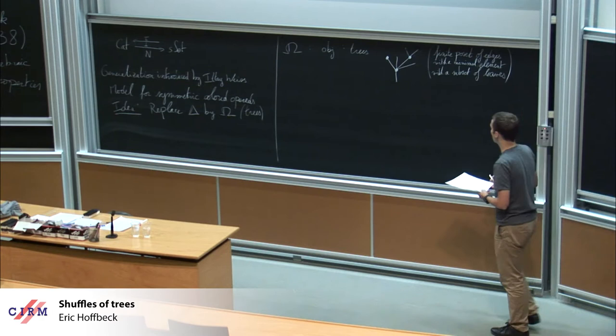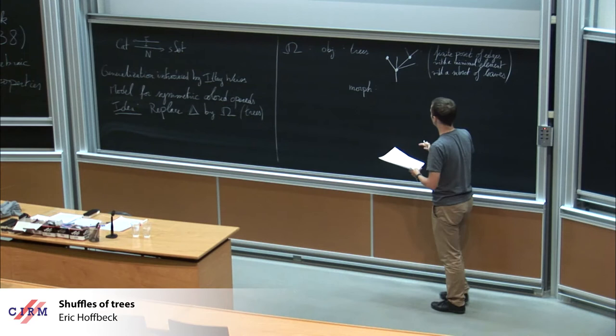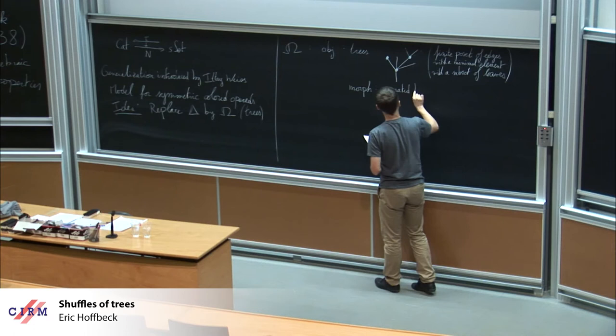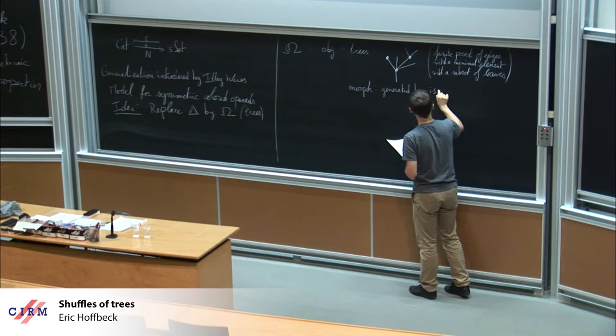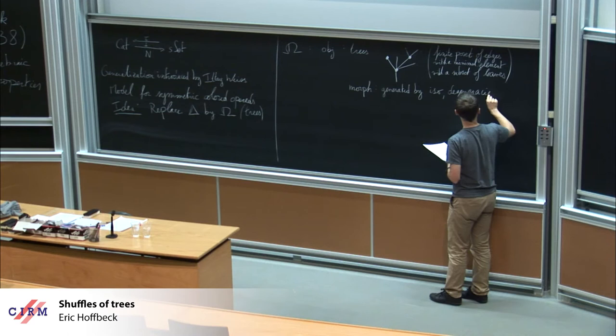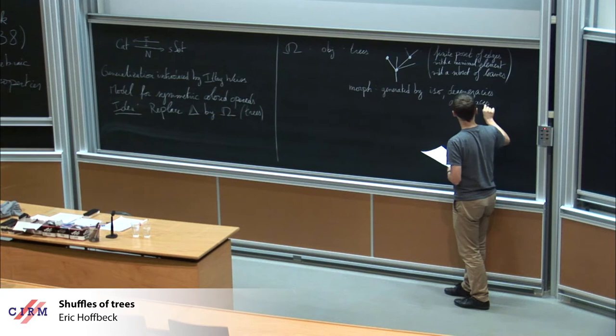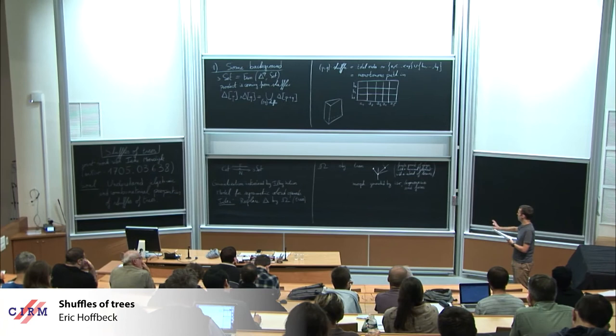For morphisms, you have two ways to define them. You can see them as generated by some class of morphisms, a bit like the morphisms in delta. You can generate them with isomorphisms — we always need this — degeneracies, and faces. I don't want to get into details about what are degeneracies and faces; it's not useful today. Just imagine what you could generalize from delta and probably you will get the right notions. If you don't like this definition, in a minute I can give you another one.